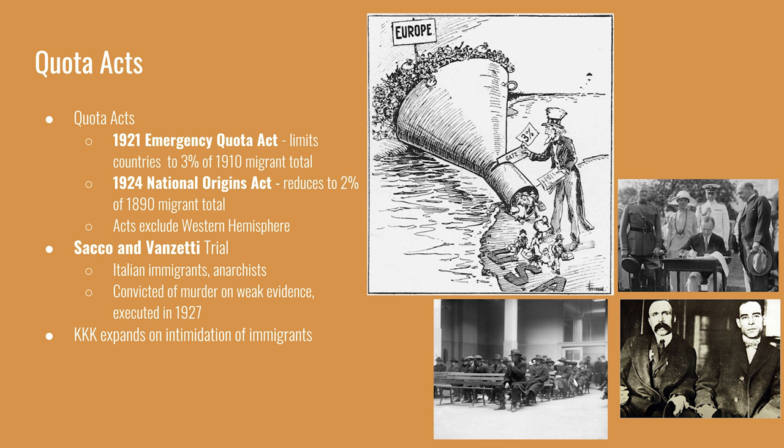The Sacco and Vanzetti trial highlighted the level of anti-immigrant sentiment in the U.S. at the time. They were Italian immigrant anarchists convicted of murder despite clear due process concerns during their trial and the denial of an appeal despite recanted evidence. They were finally executed in 1927. The KKK also expanded to the intimidation of immigrants — no longer just targeting African Americans, but now also targeting newcomers.